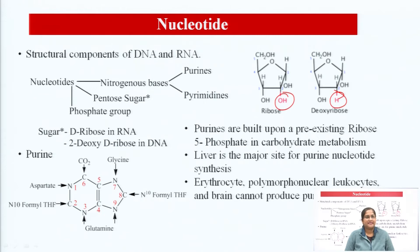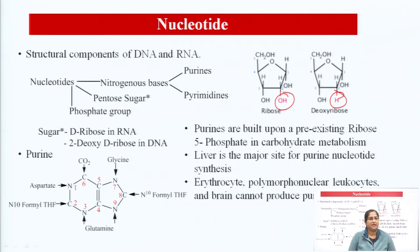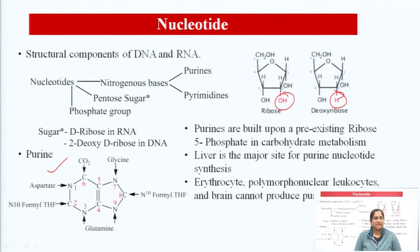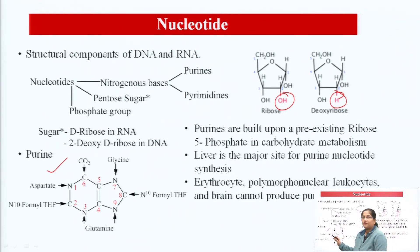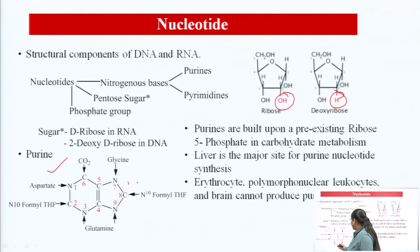Now let us discuss about purines. In this lecture we are going to study about purines. Here is the structure of the purine nucleotide. The purine is a purine nitrogenous base. Purine has a structure in which you can see there are parts containing nitrogen and carbon, and the atoms are numbered here.